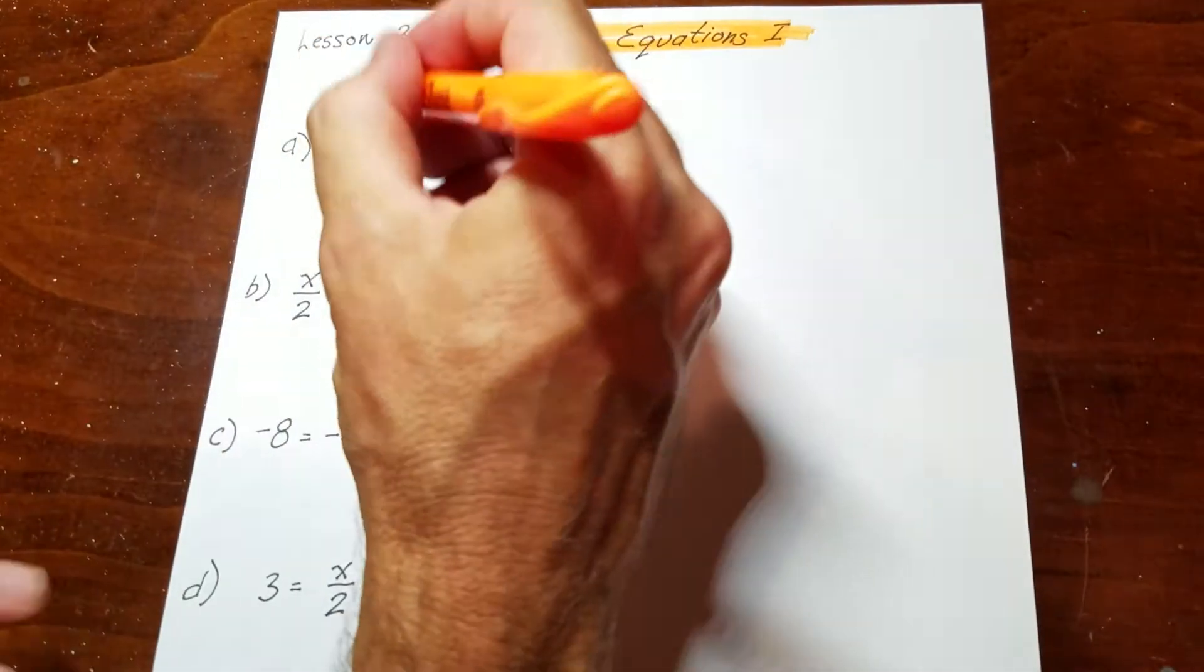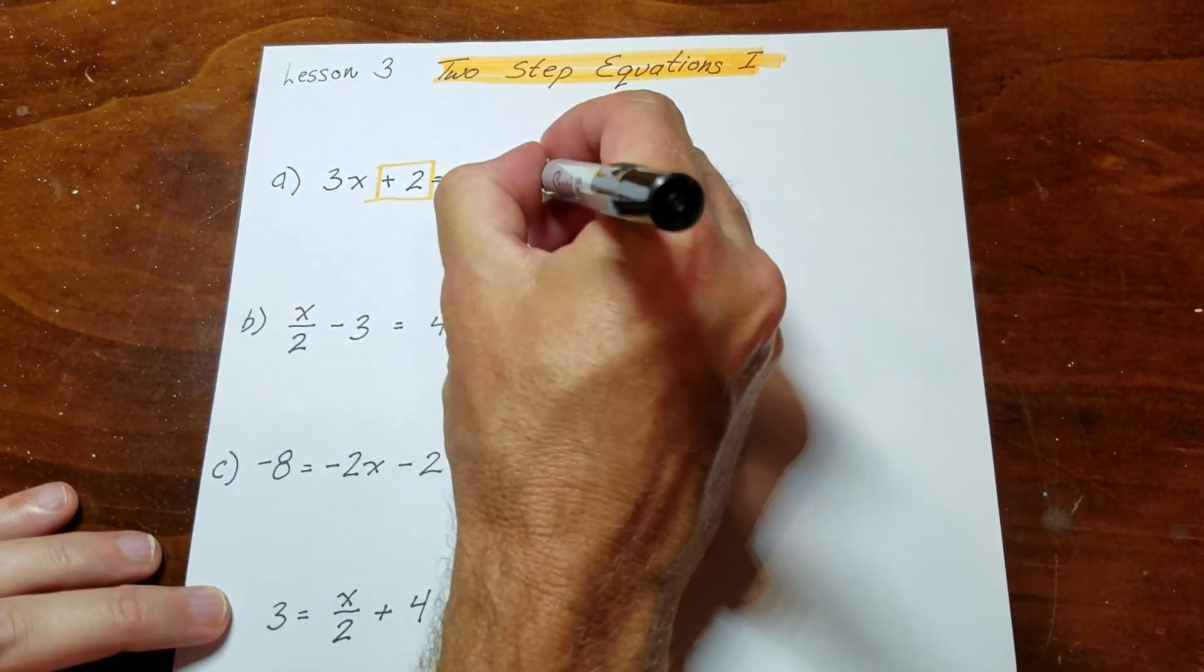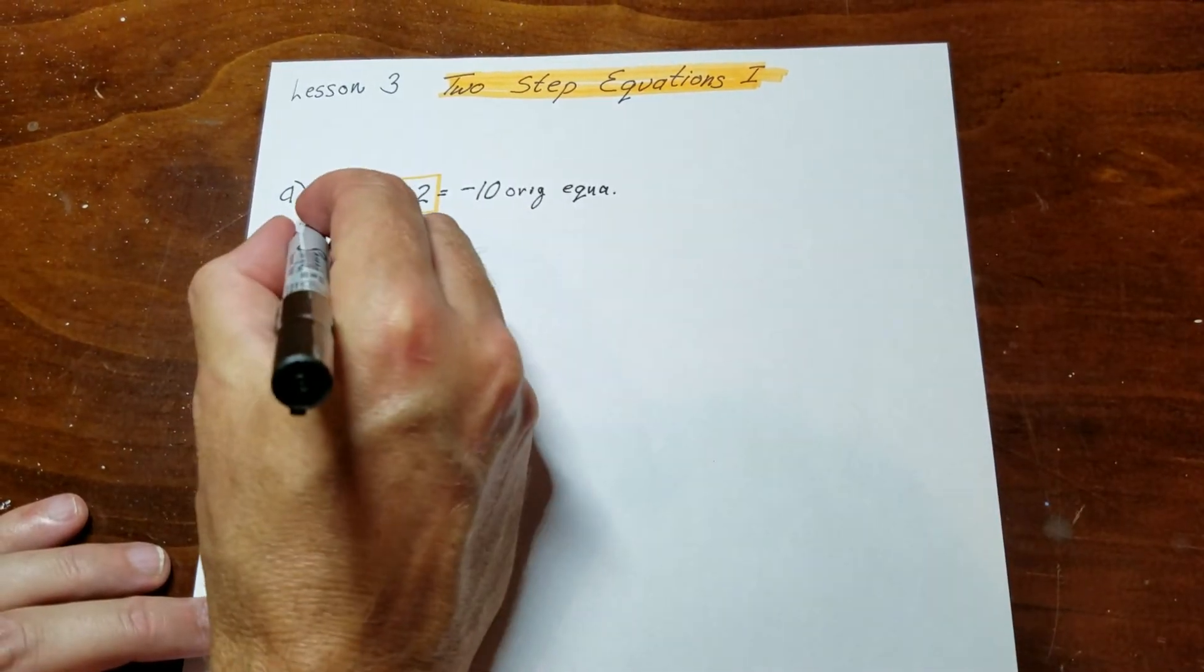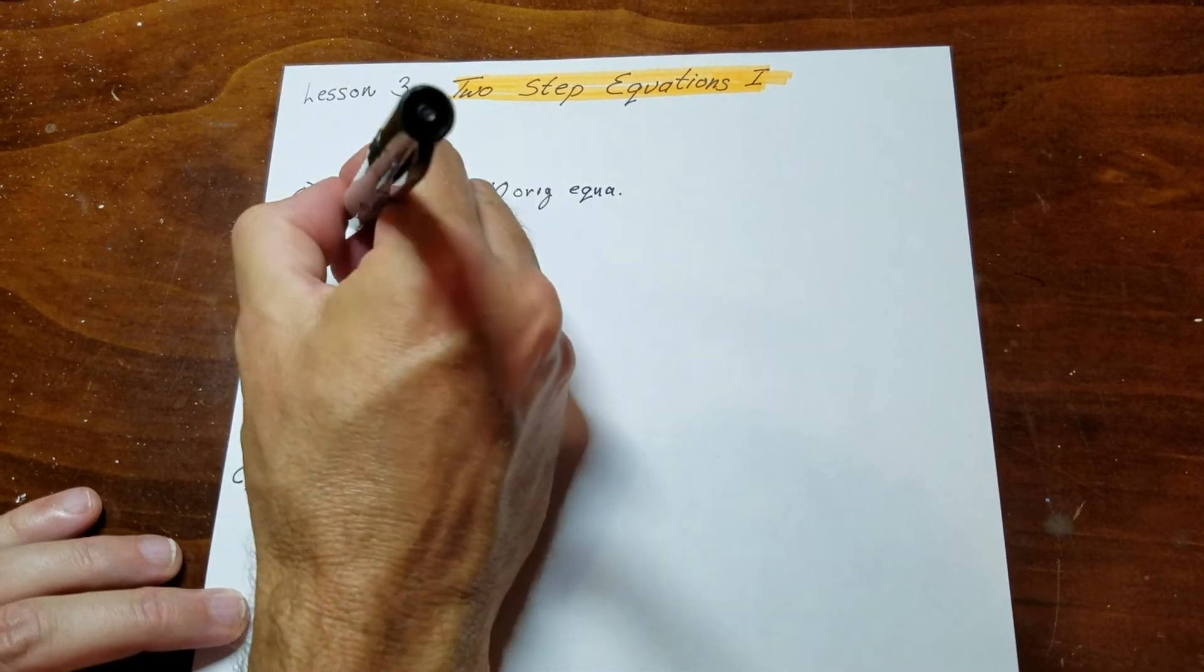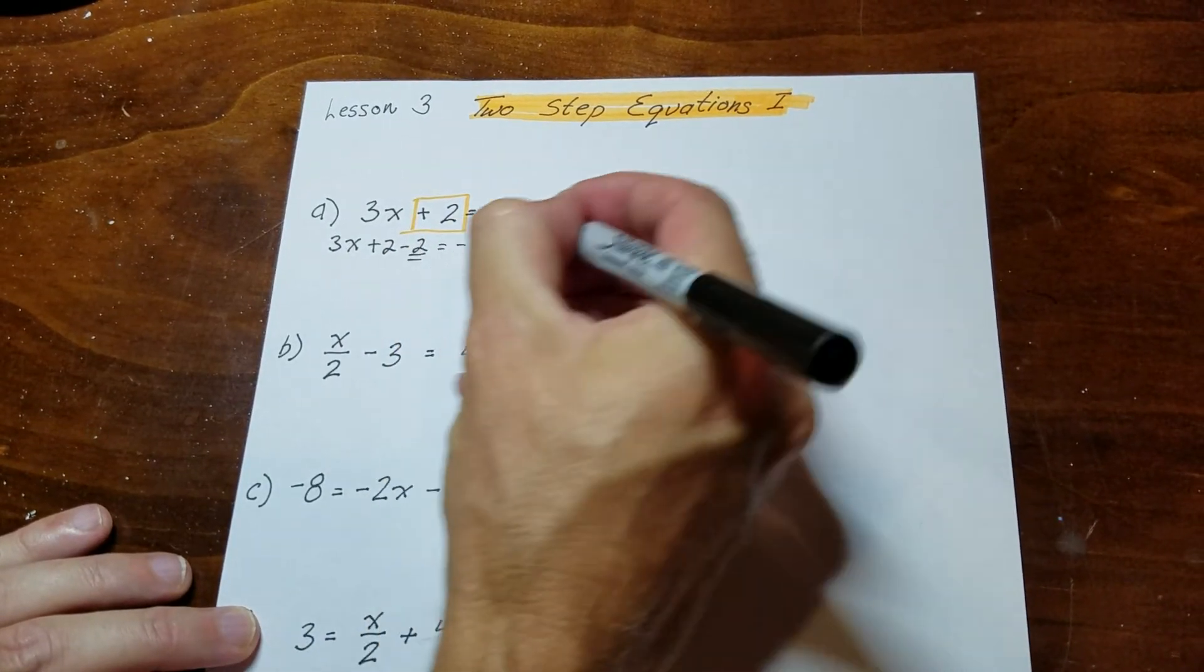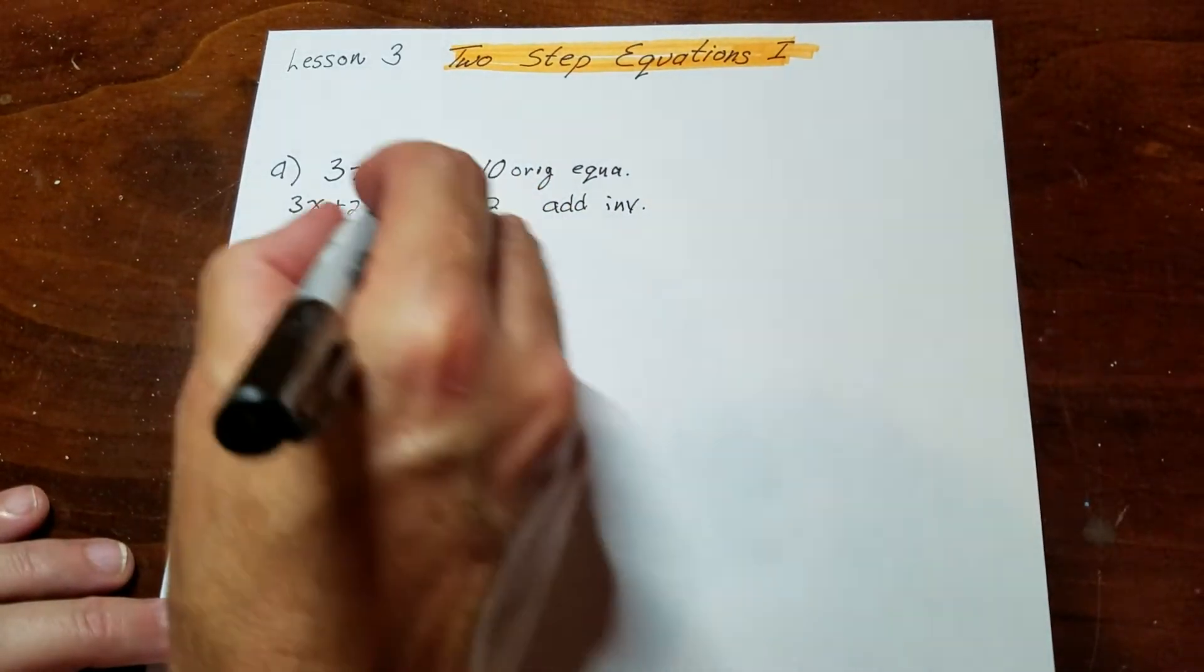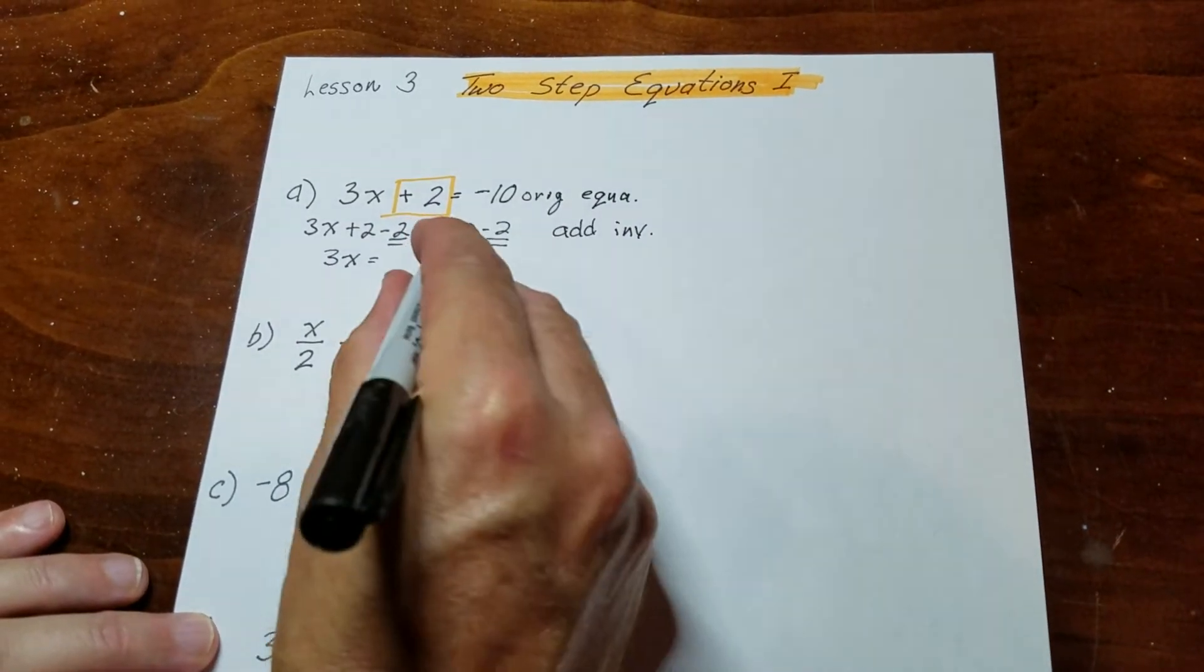So what we're gonna do is we're gonna start by getting rid of the constant term, which is this number over here. This is my original equation, and then what I'm going to do is the additive inverse. If you don't know what that is, there's another video on this channel, so you might want to go ahead and give that one a look.